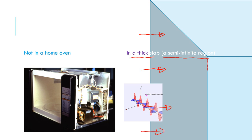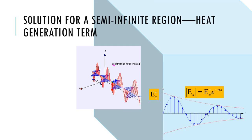We consider plane waves normal to the surface. We want to study this very simple situation because we can find a solution easily and interpret it; otherwise it's too complex. From that simple solution we'll qualitatively understand what goes on in a microwave oven. For this semi-infinite region we want the solution for the electric field and, more importantly, the heat generation term.